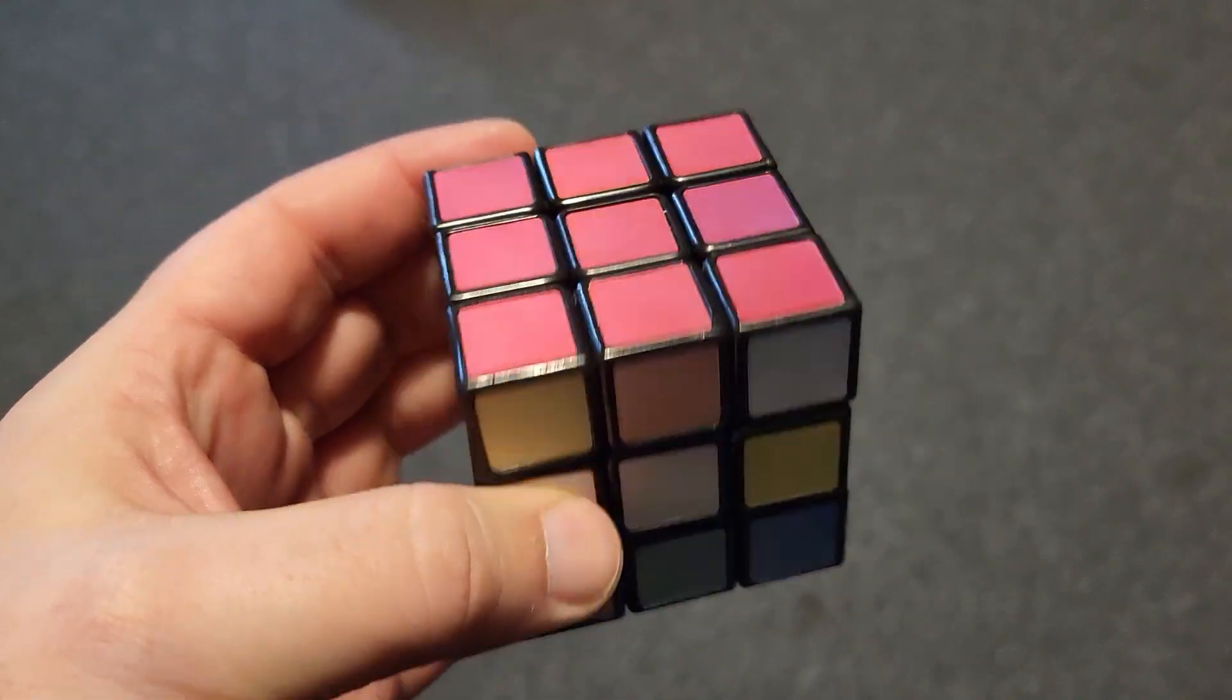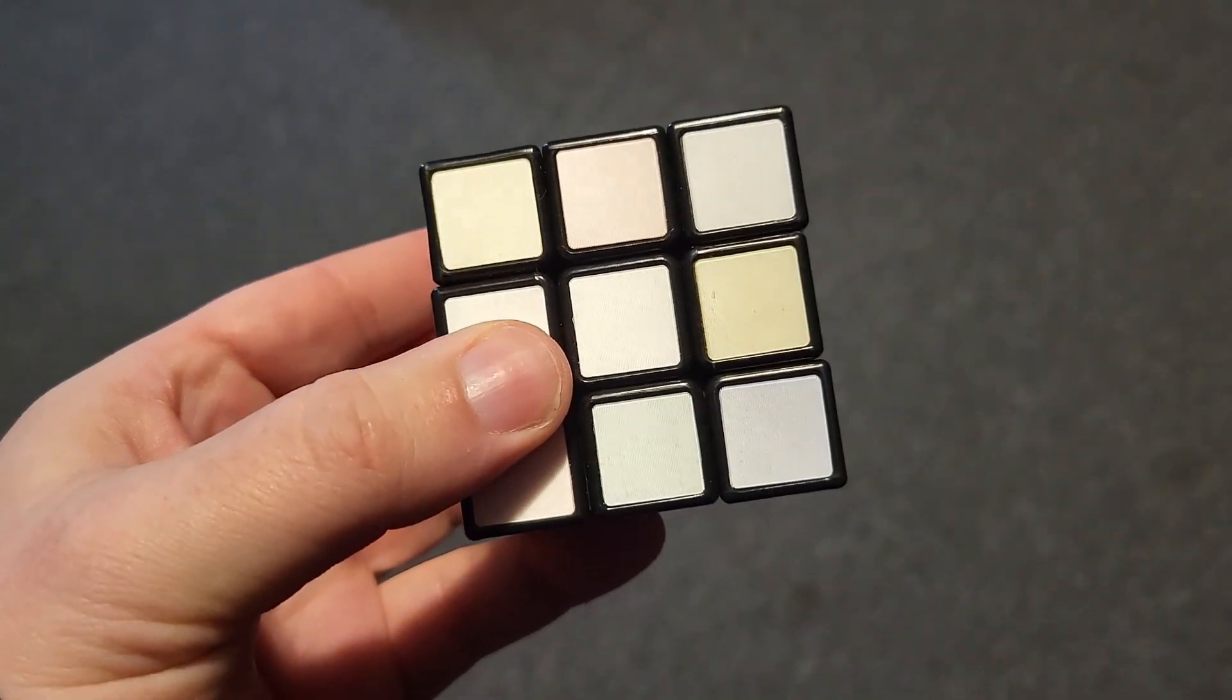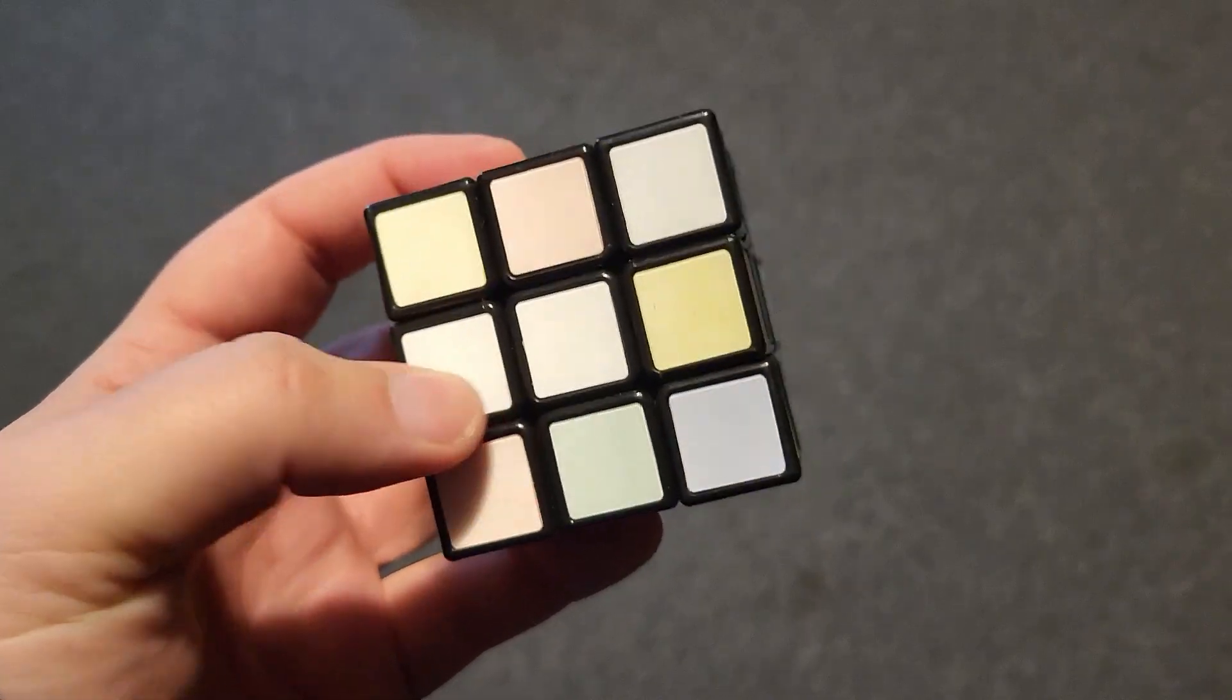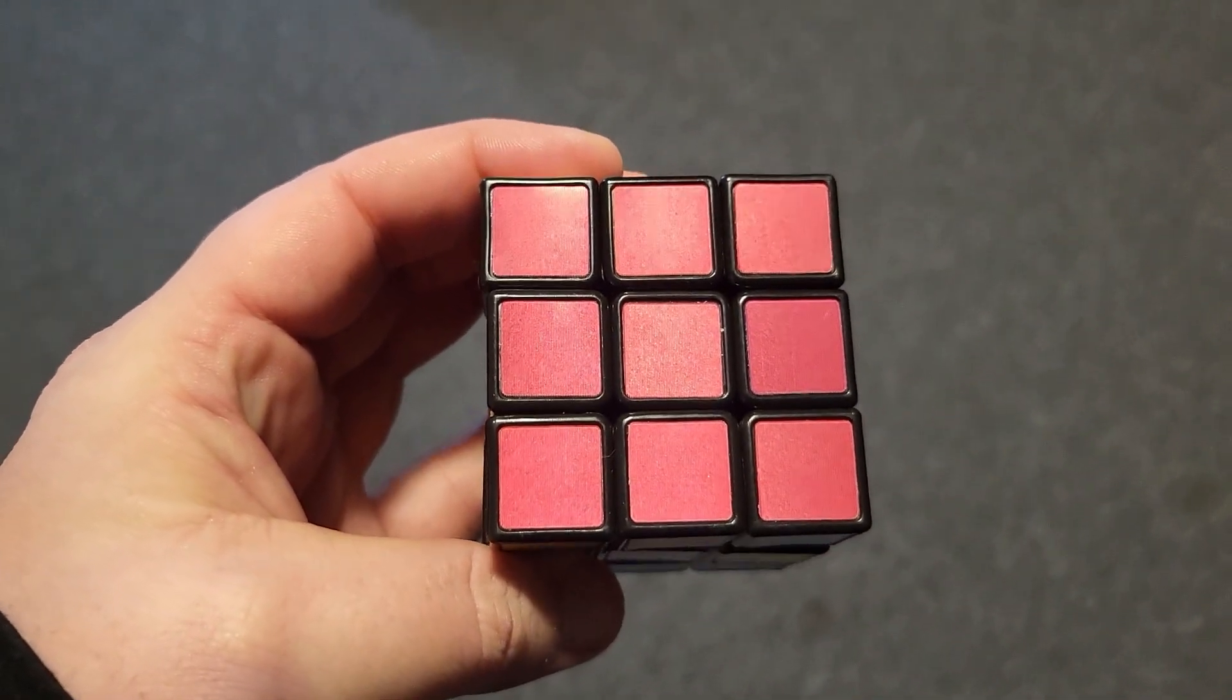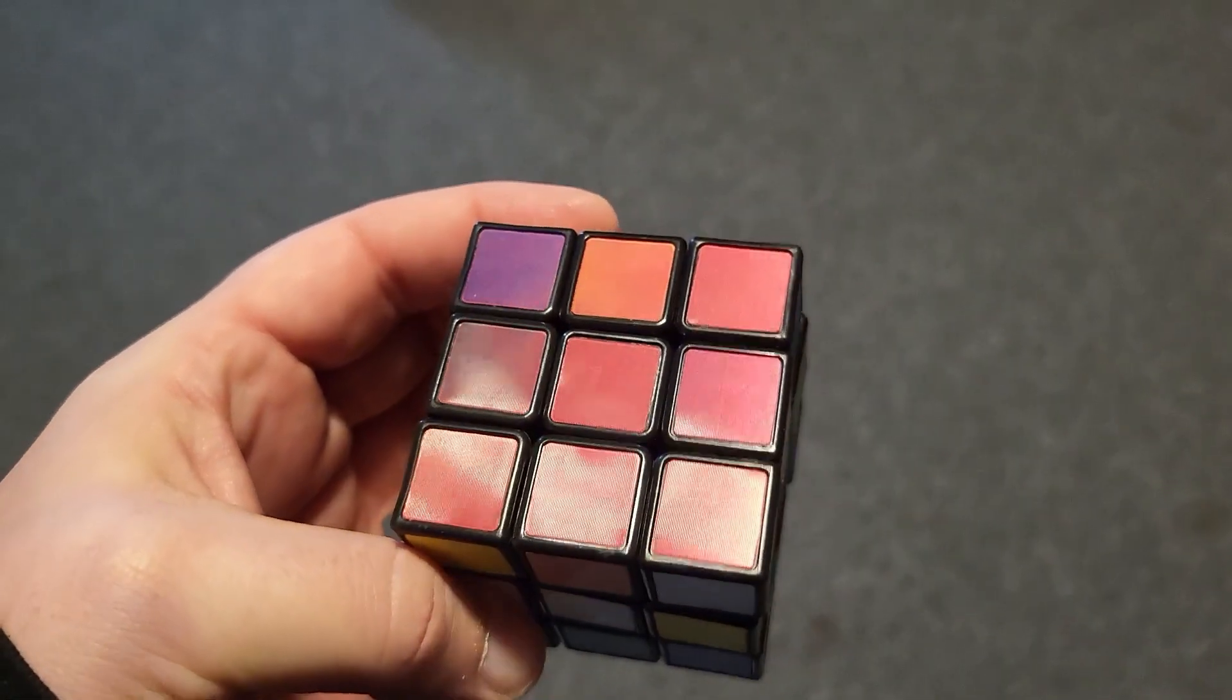This is called the impossible Rubik's cube and you might think it looks like a regular Rubik's cube. That's the white side, that's the red side. But you might have already noticed that it only looks those colors from a certain angle.